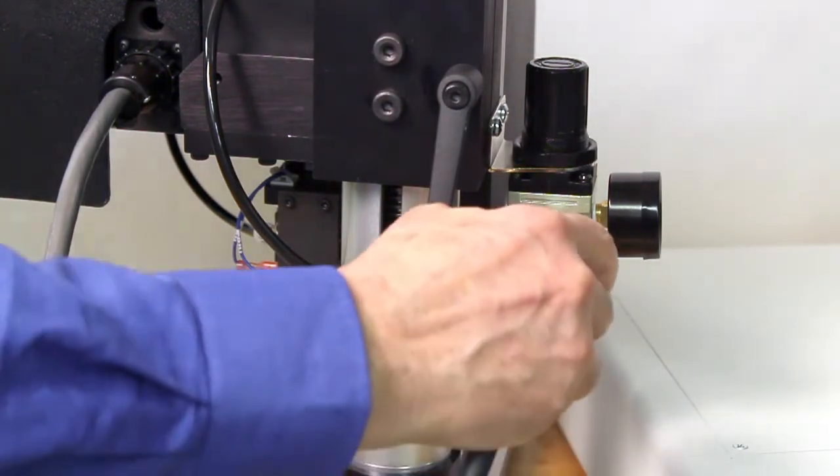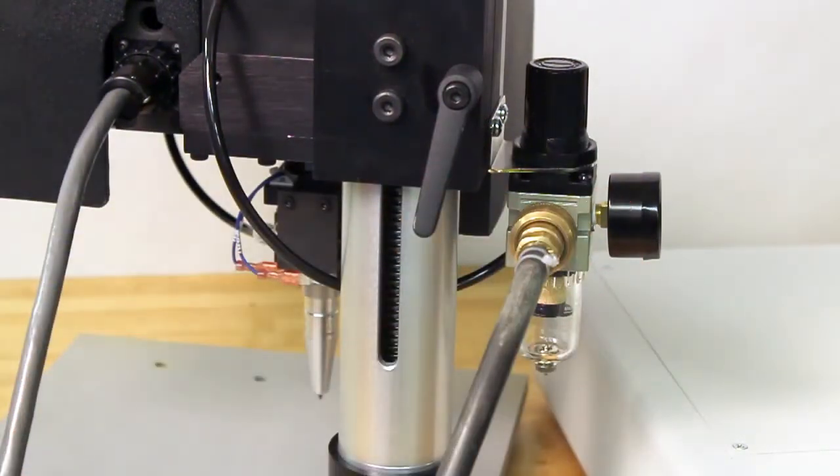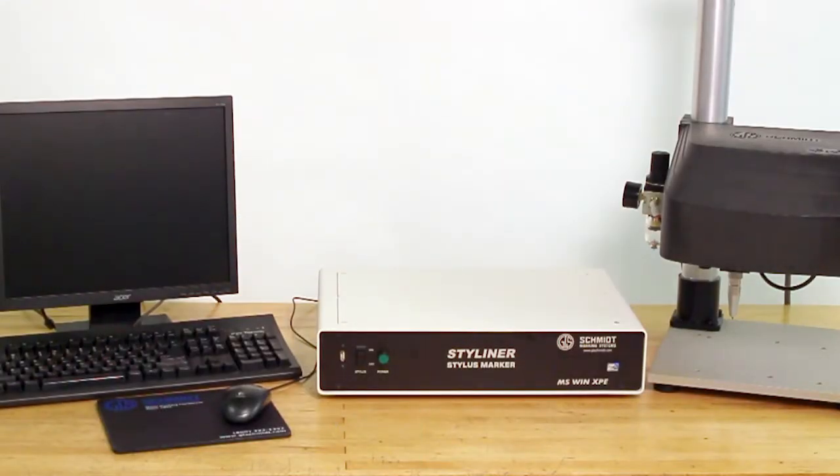Then connect your shop air to the regulator on the side of your marking head. Your marking system will now be ready for you to set up your mark.